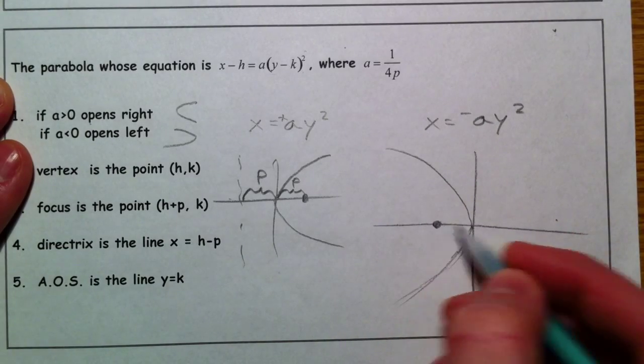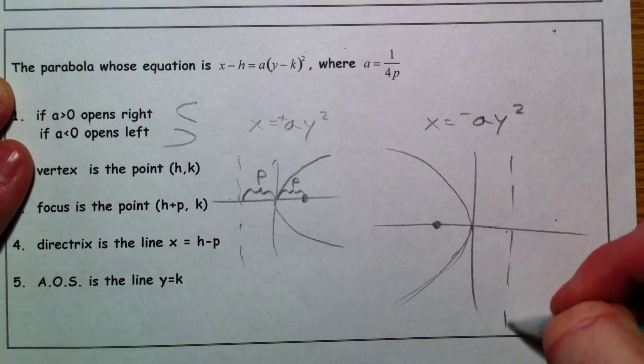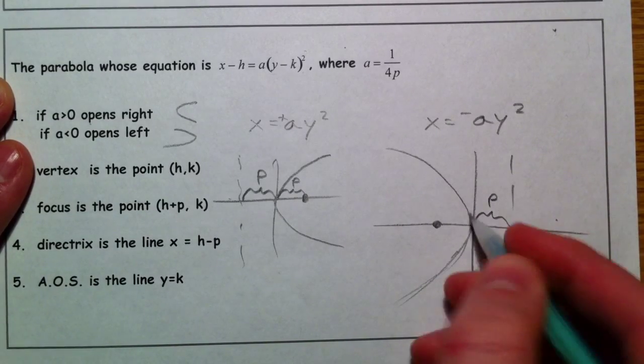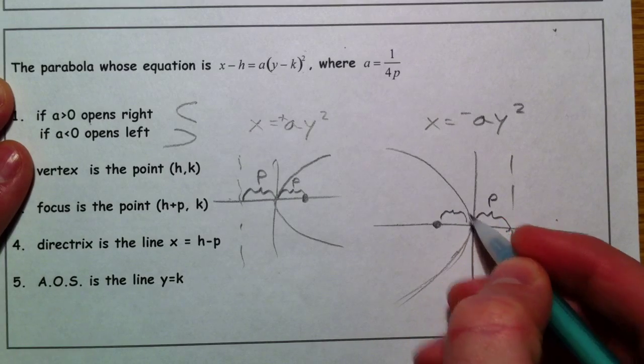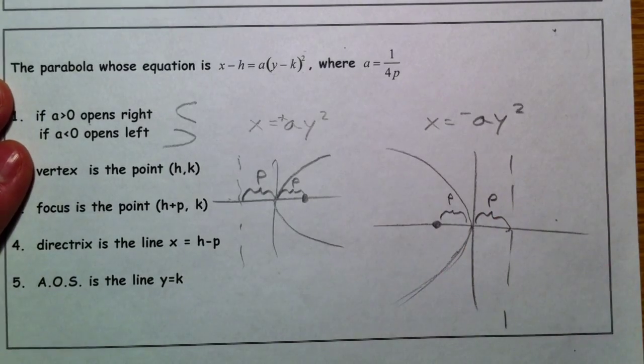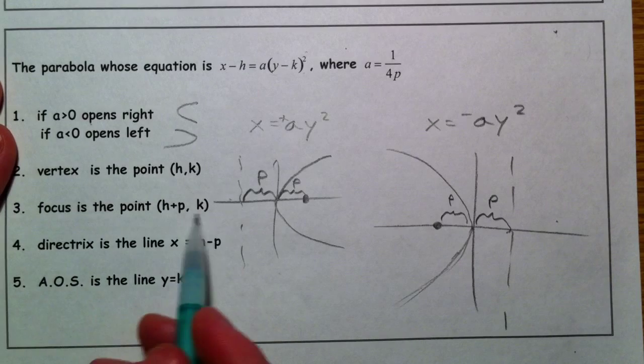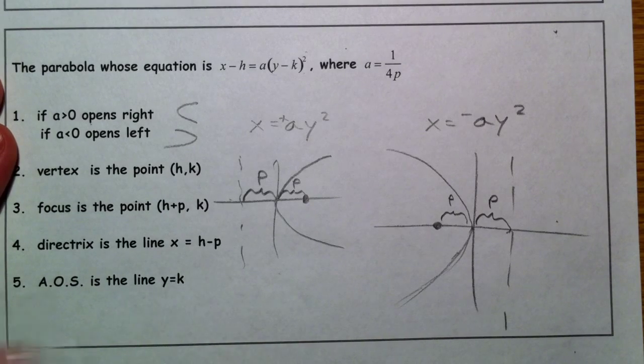And all I'm doing is quickly graphing these. So you have a p value, and whatever p is there. These equations are good, but all it is is relative placement.